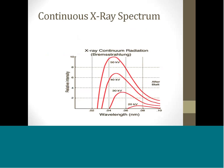A graph of X-ray intensity plotted against energy shows that the maximum energy, or minimum wavelength, of the radiation corresponds to the maximum voltage on an X-ray tube. The graph also indicates that the average energy is approximately two-thirds of the maximum energy.